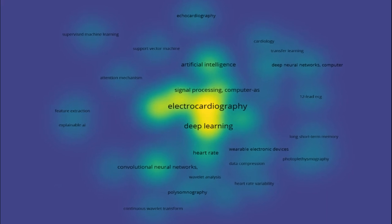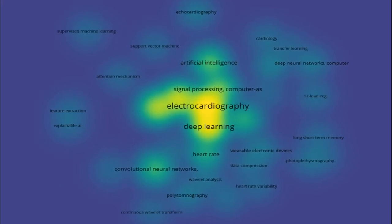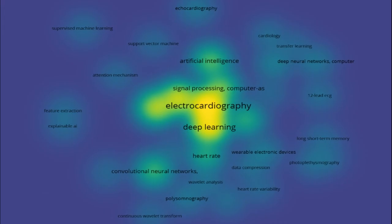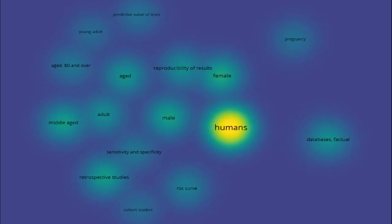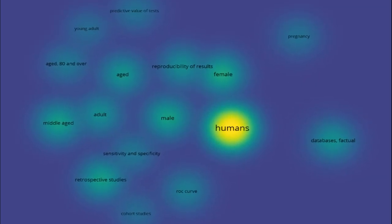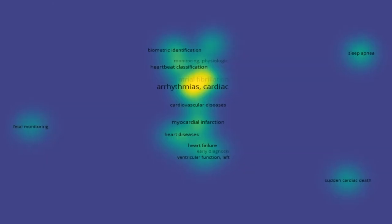This study provides a systematic review of deep learning (DL) methods applied to electrocardiogram (ECG) data for various clinical applications, including blood pressure estimation, cardiovascular disease diagnosis, ECG analysis, biometric recognition, sleep analysis, and other clinical analyses.